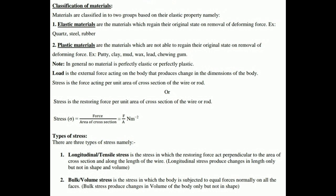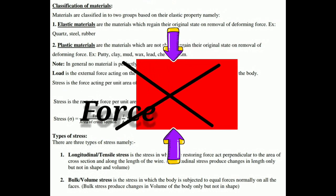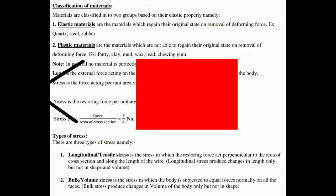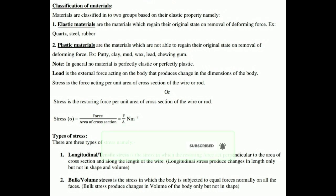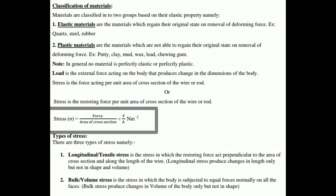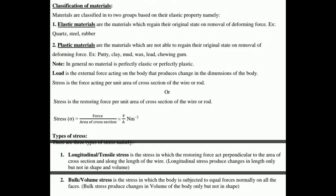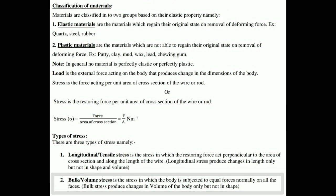Stress is the force acting per unit area of the cross section of a wire, rod, or any body. It can also be defined as the restoring force per unit area of a cross section. The formula for stress is Force divided by Area (F/A), and the unit is Newton per meter squared. There are three types of stress: longitudinal stress (also called tensile stress), bulk or volume stress, and shearing or tangential stress.